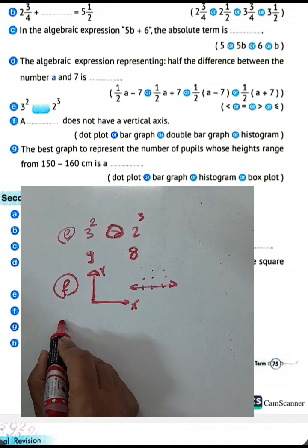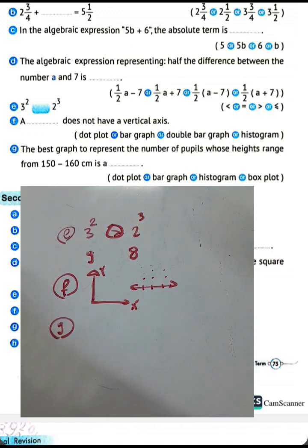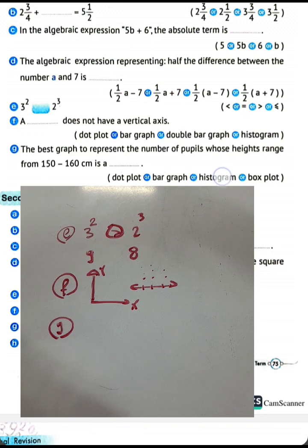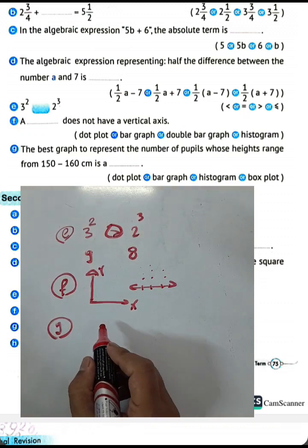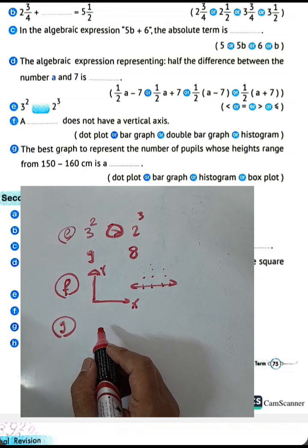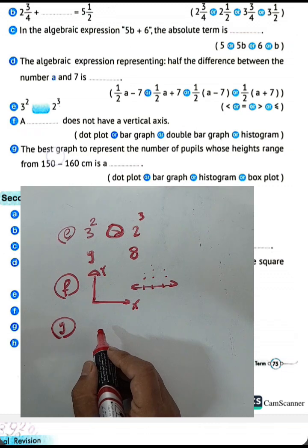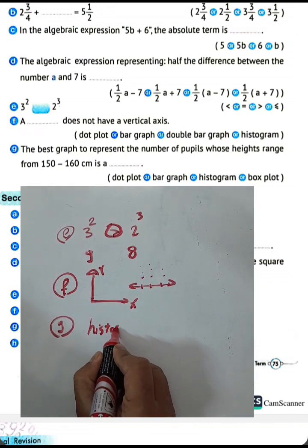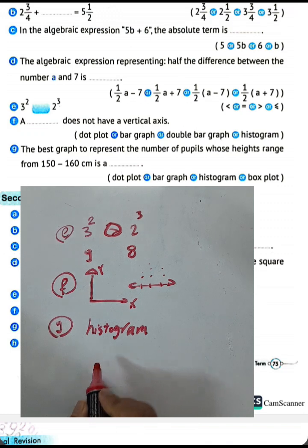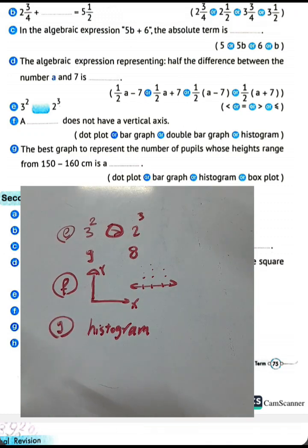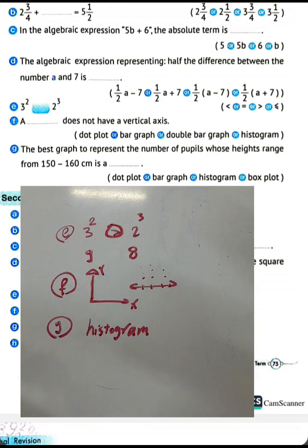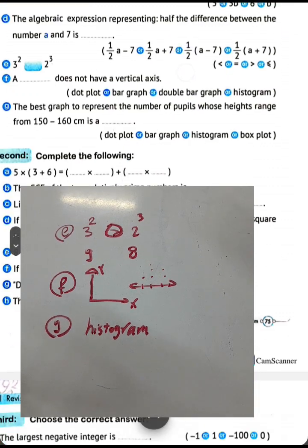Question letter G: the best graph to represent the number of pupils whose heights range from 150 to 160 is a histogram. We use a histogram because it works with intervals, like from 150 to 160. You must choose histogram — it is the best graph to present the number of pupils whose height ranges from 150 to 160.